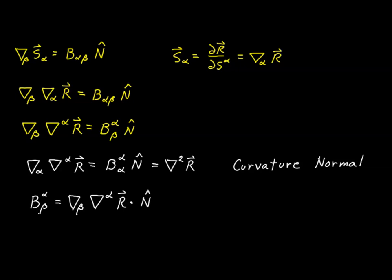Notice that our curvature tensor components — there will be four of them, since alpha and beta each vary from 1 to 2. If alpha and beta are the same (both 1 or both 2), this operation is roughly equivalent to the second partial derivative of R with respect to S1 or S2. If alpha and beta are different, it represents a mixed derivative — a second partial derivative of R with respect to one variable then the other. This gives all four possible combinations of second-order derivatives with respect to our two surface coordinates, yielding four scalar components when dotted with the normal.